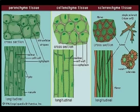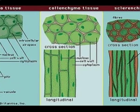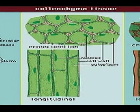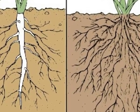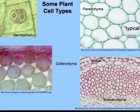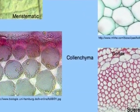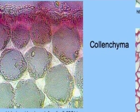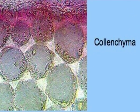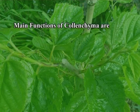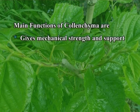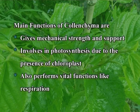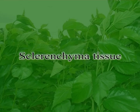Cholenchyma tissue is often called living mechanical tissue, always hypodermal in position in dicot stem and midrib of leaf. Cholenchyma is absent in monocots and in roots. Cell wall is made up of cellulose and pectin, and walls are unevenly thickened. The cell has nucleus, cell organelles and vacuoles, and intercellular spaces are rare. Main functions of cholenchyma are: gives mechanical strength and support, involves in photosynthesis due to the presence of chloroplast, and also performs vital functions like respiration.